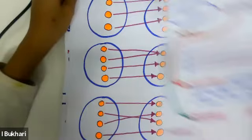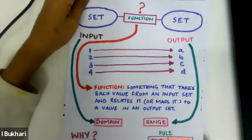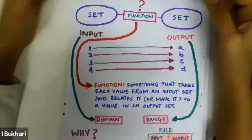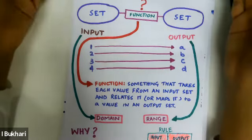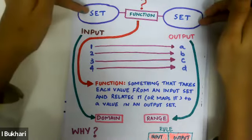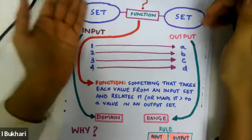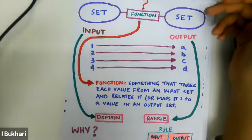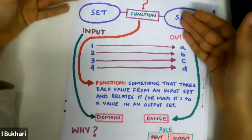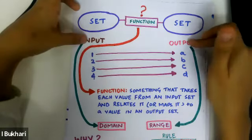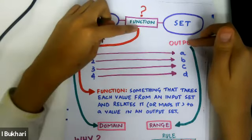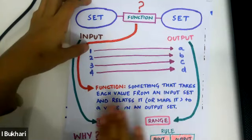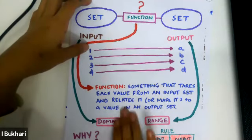Now, a function relates one set to another — but exactly how does it do that? It helps to name these sets. The set put into the function is the input, and the set that comes out of the function is the output. A function takes each value from an input set and maps it to a value in an output set.